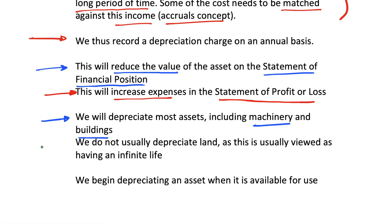However, we do not usually depreciate land, as this is viewed from an accounting standpoint as having an infinite life. So if we own a field, we don't need to depreciate it even though it is an asset the business owns. Of course, in however many years the sun might expand and destroy all land on earth, but in accounting we don't tend to look that far — we just assume land has an infinite life and do not depreciate it as a general rule.